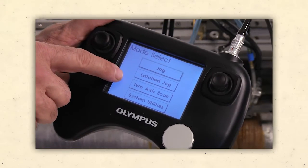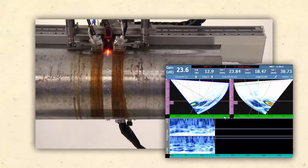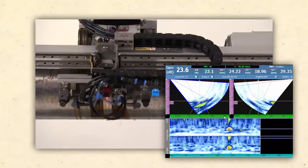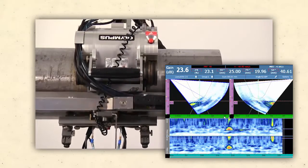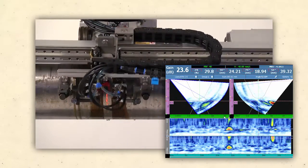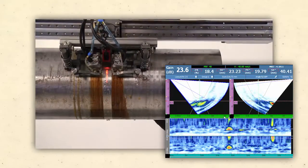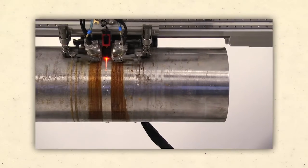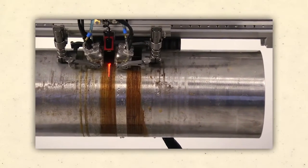A two-axis mechanized scanner provides full automated inspection of CRA welds to include one-line scans for detection and raster scanning for improved flaw sizing and characterization.